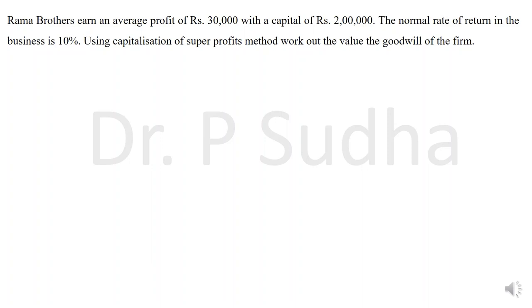Rama Brothers earns an average profit of rupees 30,000 with the capital of rupees 2 lakhs. The normal rate of return in the business is 10%. Using capitalization of super profit method, work out the value of goodwill of the firm. The first step: we have to calculate the capital of the firm. In this question the capital is given directly as 2 lakhs.